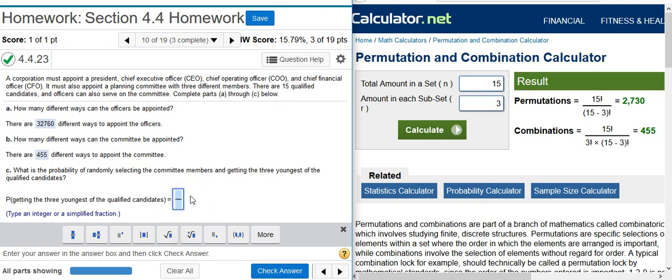The part goes on top. How many of the ways that you can pick qualified candidates represent the three youngest? Well, there's only one way in which the three youngest members get on the committee. How many ways are there total? Well, for the committee, we already calculated that there's 455 different ways. So that's going to be the whole. I check my answer.